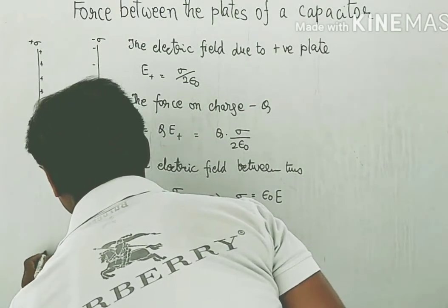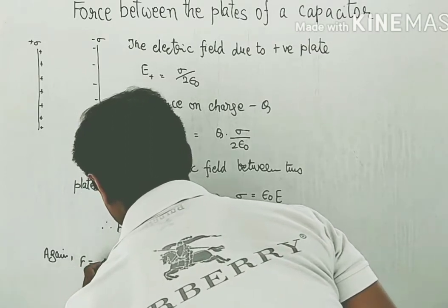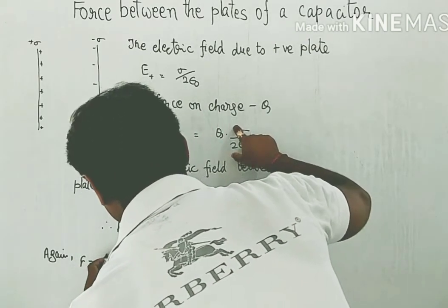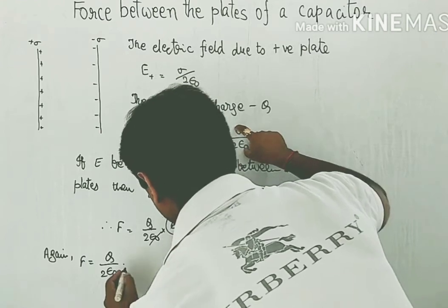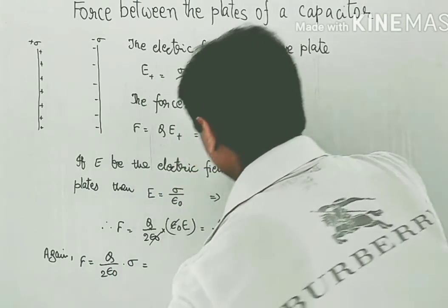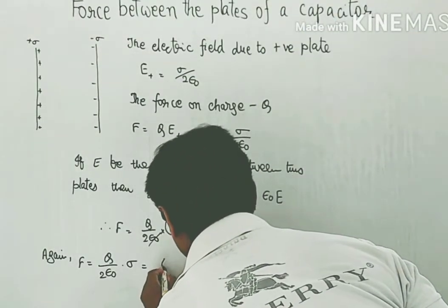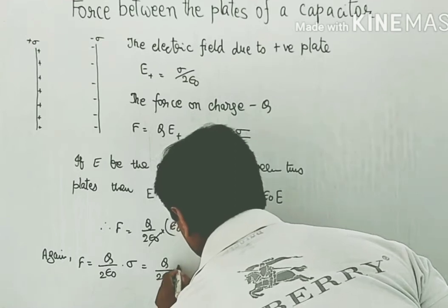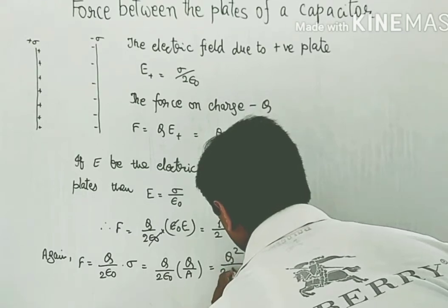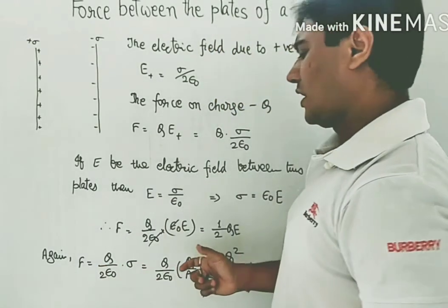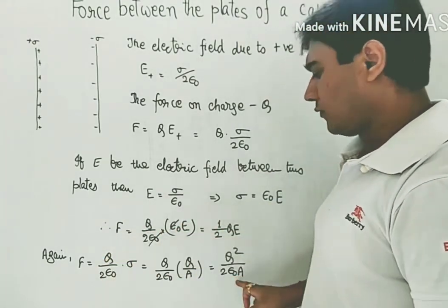Let's have another form. F equals Q by 2 epsilon naught into sigma, and for sigma we substitute Q by A. So we have Q upon 2 epsilon naught into Q upon A, which gives us Q squared upon 2 epsilon naught into A. So as may be the need, we can use either this form of force or this form.